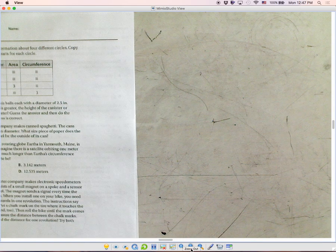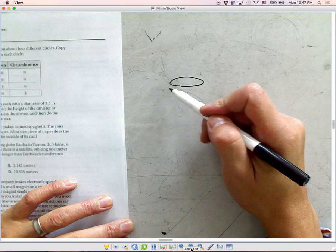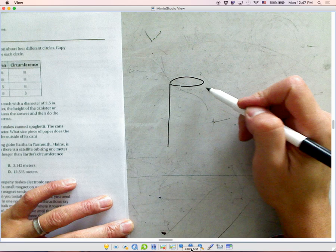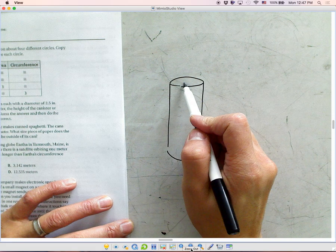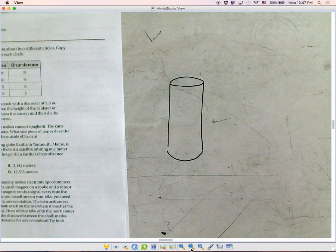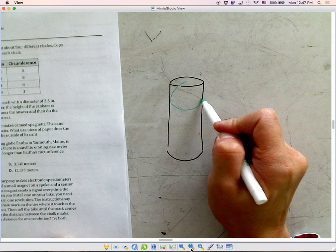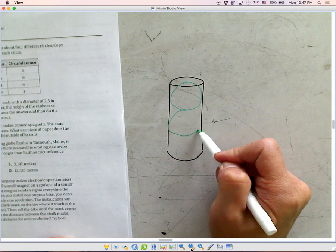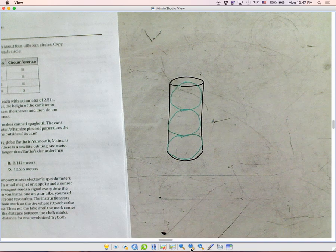Let's draw the figure so that we can see it better. A canister, which is something like this, contains three tennis balls. One, two, and three. You know what I mean?